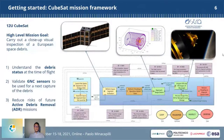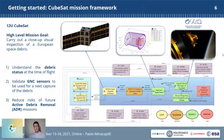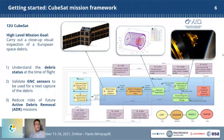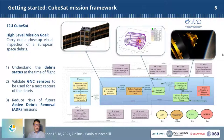The CubeSat mission framework: this is a 12-unit CubeSat whose Phase A was in charge of Politecnico di Milano, covering mission analysis, GNC (guidance, navigation and control), and all systems engineering activities. The high-level mission goal is to carry out a close-up visual inspection of a European space debris. Other objectives are to understand the debris status at time of flight, validate GNC sensors for a future debris capture mission, and reduce the risks of failure of future active debris removal missions.